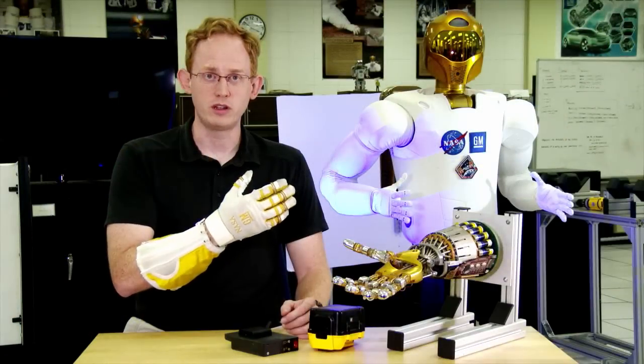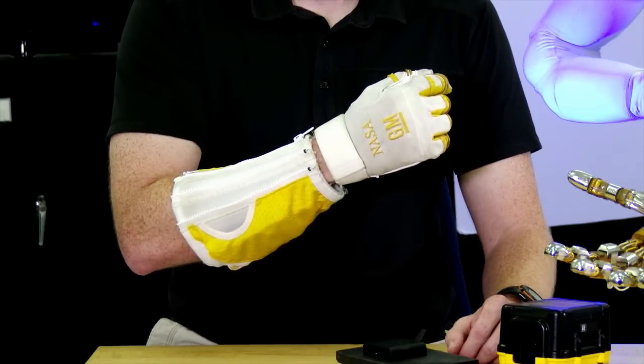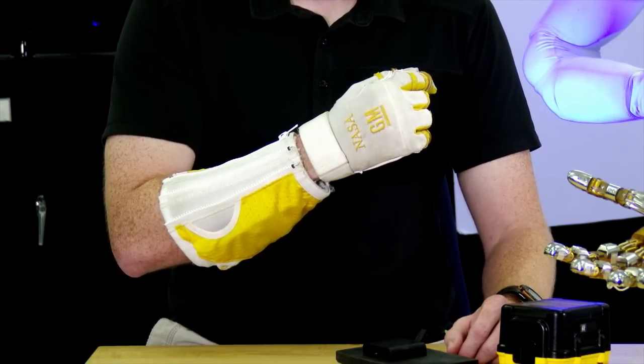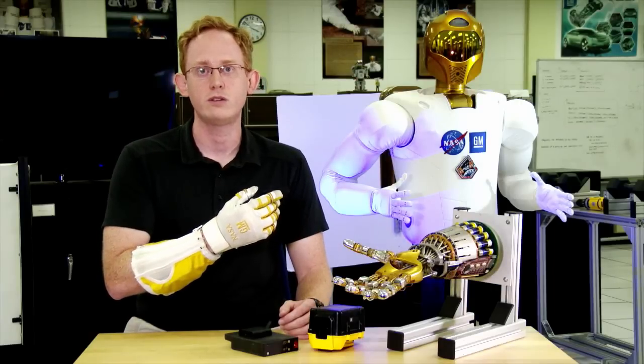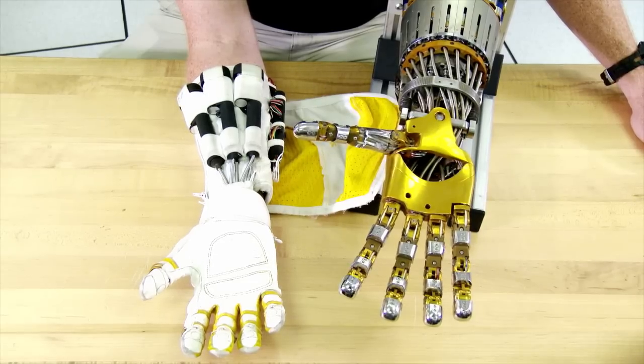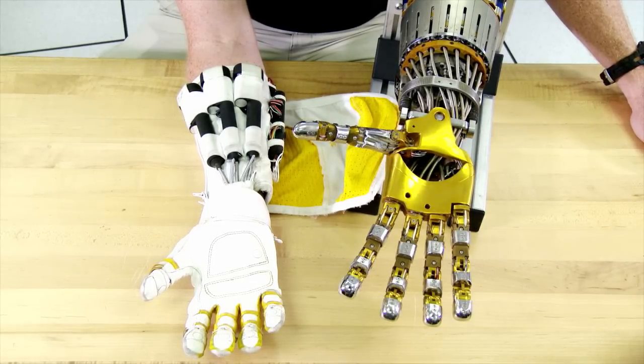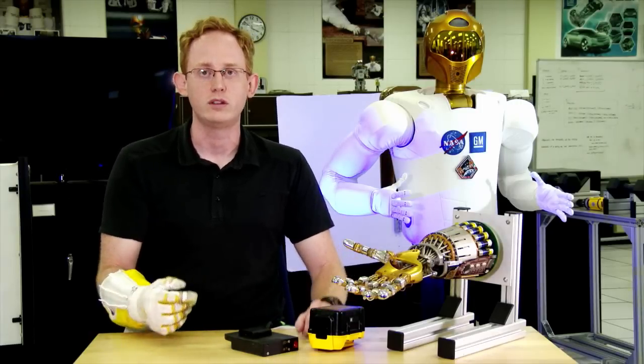This is RoboGlove, a robotic system developed between NASA and General Motors. It's a spin-off of the Robonaut 2 technology, built into the Robonaut 2 hand and powered based on Robonaut actuation and an external power supply.